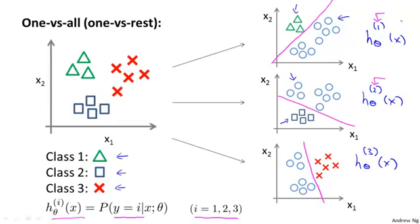So in the first instance, for this first one up here, this classifier was learning to recognize the triangles. So it's thinking of the triangles as a positive class. So h superscript 1 is essentially trying to estimate what is the probability that y is equal to 1, given x and parameterized by theta.